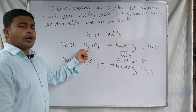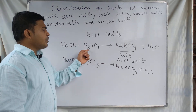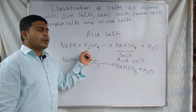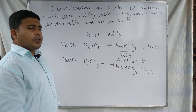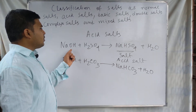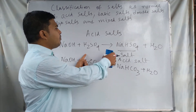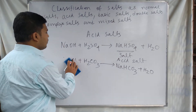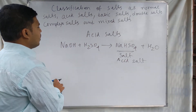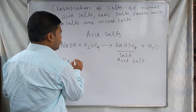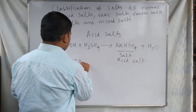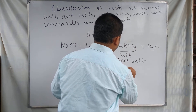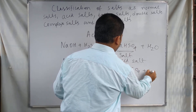H2CO3 has two replaceable hydrogen atoms because it is a dibasic acid. Only partial replacement occurs — only one hydrogen is replaced by sodium ion, so sodium hydrogen carbonate is formed. This is why it is called an acid salt. On complete replacement of the two hydrogen atoms of sulfuric acid, if NaHSO4 again reacts with NaOH, the complete replacement of the hydrogen atom occurs and sodium sulfate plus water is formed.